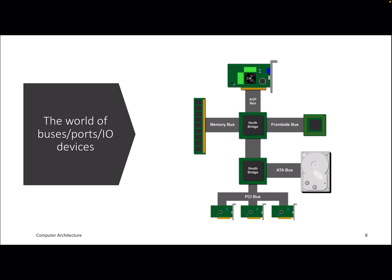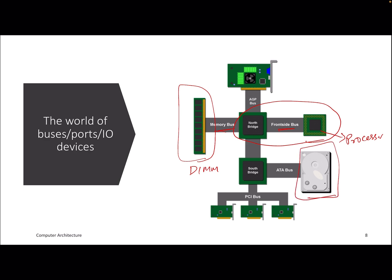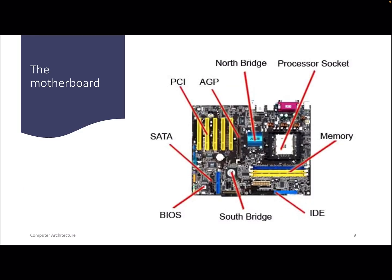Here is a typical organization including IO devices. We have our processor with the L1 cache, L2 cache, pipeline, and our DIMM. The northbridge is the interface between the processor and the DIMM, connecting the memory bus and the front-side bus. There are also interconnects or buses connecting IO devices — for example, the hard disk is connected to the southbridge, and other peripherals are connected through a PCI bus.